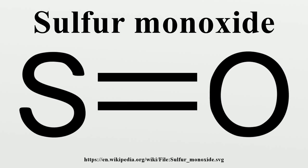Sulfur monoxide is an inorganic compound with formula SO. It is only found as a dilute gas phase. When concentrated or condensed, it converts to S2O2.